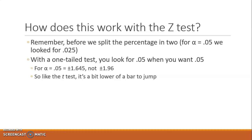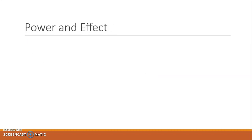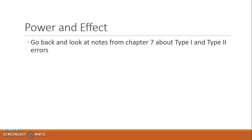Much of the first part of this chapter is basically that — the difference between a one-tailed and a two-tailed test in how you find whether or not your score is extreme enough to be considered significant. Much of the rest of the chapter deals with power and effect. Before we start talking about this, you might want to go back and review your notes from chapter 7 where I spent quite some time talking about type 1 and type 2 errors, to make sure you really understand the difference between the two.